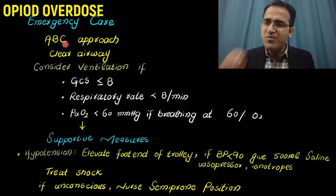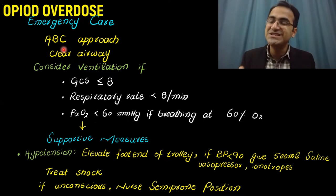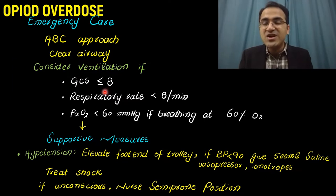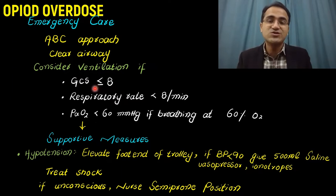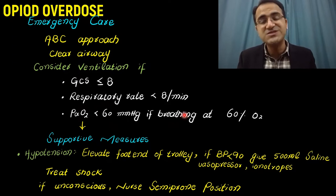Treatment of opiate overdose involves the ABC approach: airway, breathing, and circulation. First, protect the airway, as these patients are at risk of respiratory depression with decreased respiratory rate or even apnea. You must clear the airway and consider ventilation. If the Glasgow Coma Scale is less than or equal to 8, or the respiratory rate is less than 8 per minute, or the partial pressure of oxygen is less than 60 mmHg even on supplemental oxygen, you must proceed with intubation and ventilation.